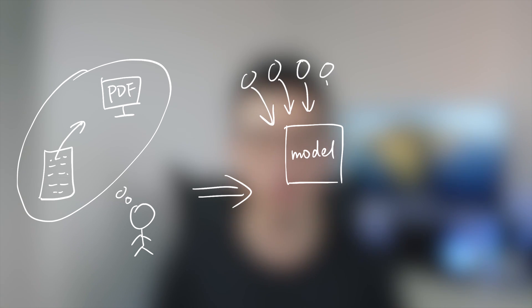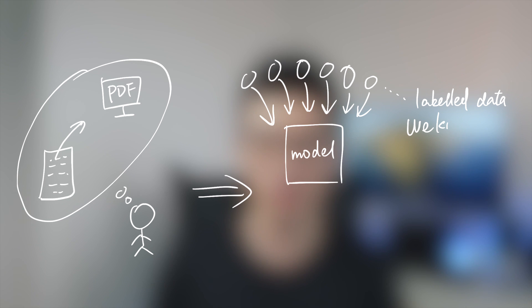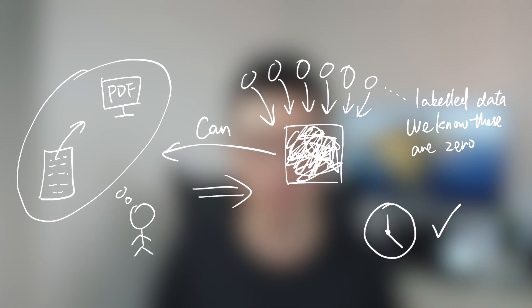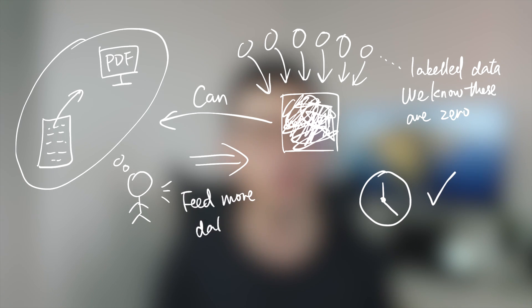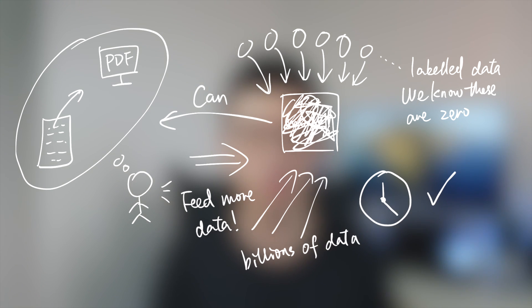For example, sometimes we want to transfer handwritten notes into a printed form that computers can edit. First, we build a model, then use different handwritten characters to train it. After training, the model can recognize our scripts. Theoretically, the more data we feed the model, the better it can do the job. But in reality, that's not true.